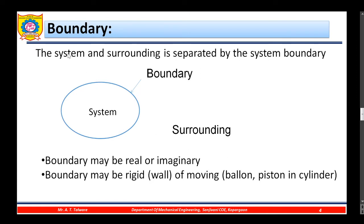Now we will define the boundary. The system and surrounding is separated by the system boundary. This system and surrounding is separated by this boundary. This surface that separates the system and surrounding is called as a boundary. The boundary may be real or imaginary. The boundary may be rigid — for example, just like a wall. It is rigid.